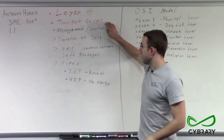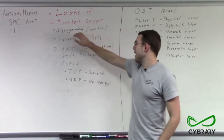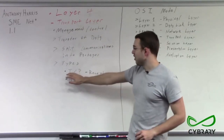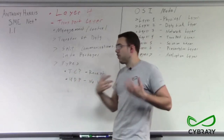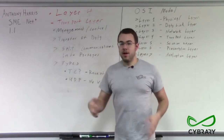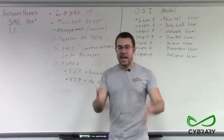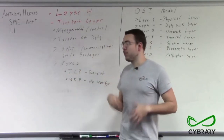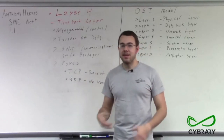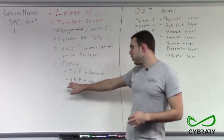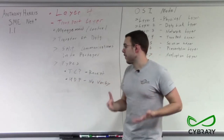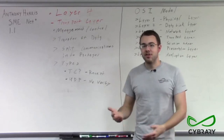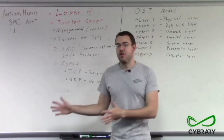Our Layer 4, our transport layer, provides management and control by managing TCP or UDP. TCP provides the ability to make sure packets are ordered properly and allows for retransmission of bad packets. UDP, on the other hand, is a method of sending packages where it just streams them out without waiting for acknowledgment.